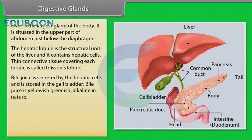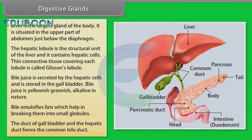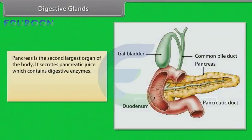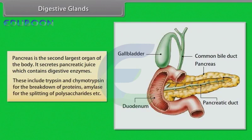Bile juice is secreted by the hepatic cells and stored in the gall bladder. It is yellowish-green and alkaline in nature. Bile emulsifies fats, helping to break them into small globules. The duct of the gall bladder and the hepatic duct form the common bile duct. The pancreas is the second largest organ of the body and secretes pancreatic juice containing digestive enzymes, including trypsin and chymotrypsin for the breakdown of protein, and amylase for the splitting of polysaccharides.